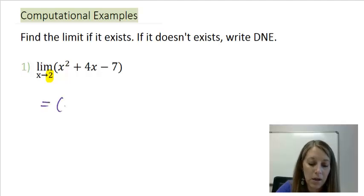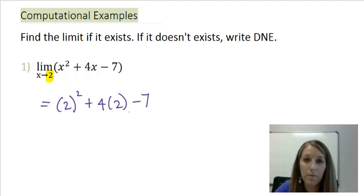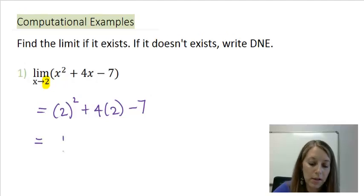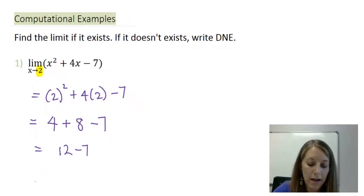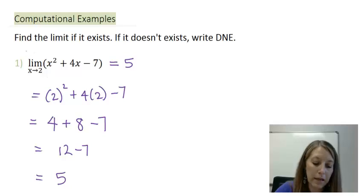That gives me 2 squared plus 4 times 2 minus 7. If I don't have any problems, like I do not see here, I just simplify, and that answer gives me my answer. 2 squared gives me 4 plus 4 times 2 gives me 8. When I subtract 7, that gives me 5. My limit as x is approaching 2 of my function, x squared plus 4x minus 7, that is equivalent to 5. That's my whole answer here.